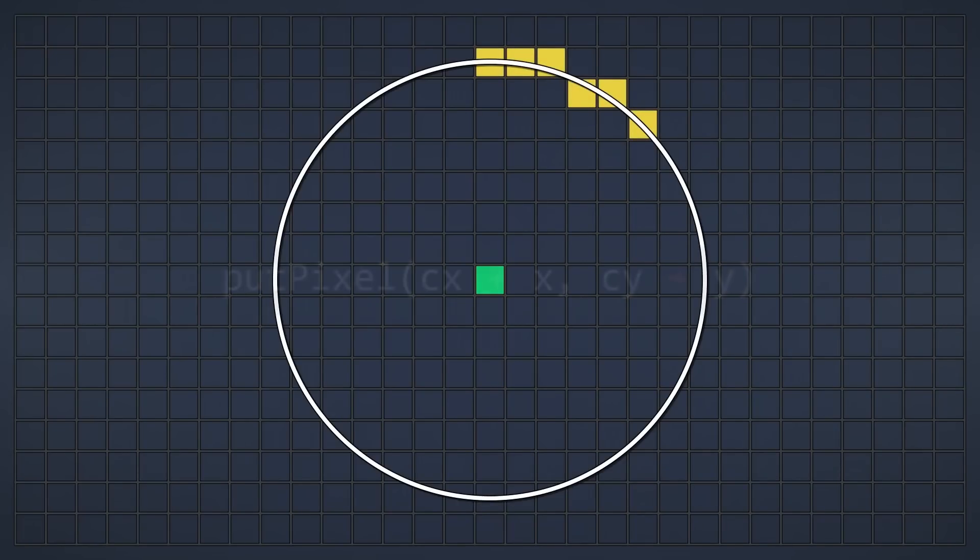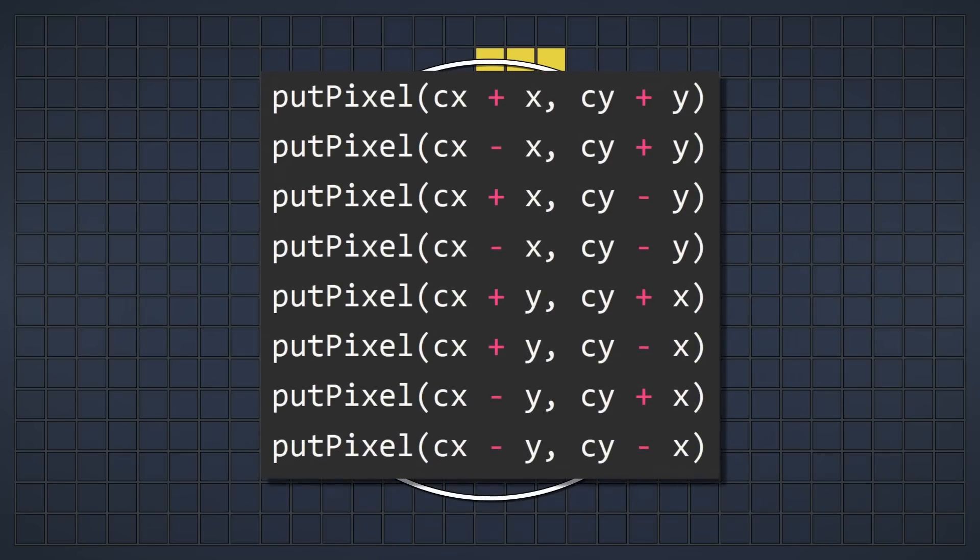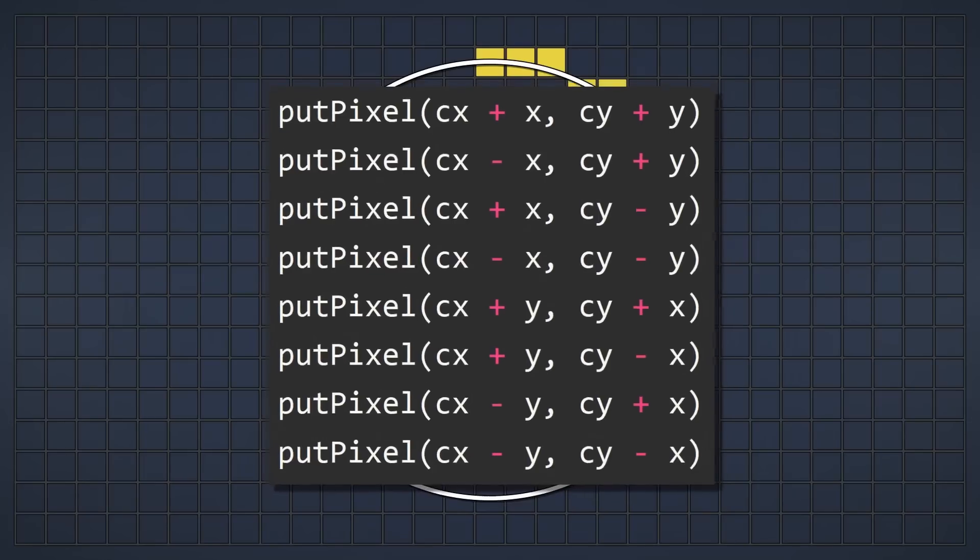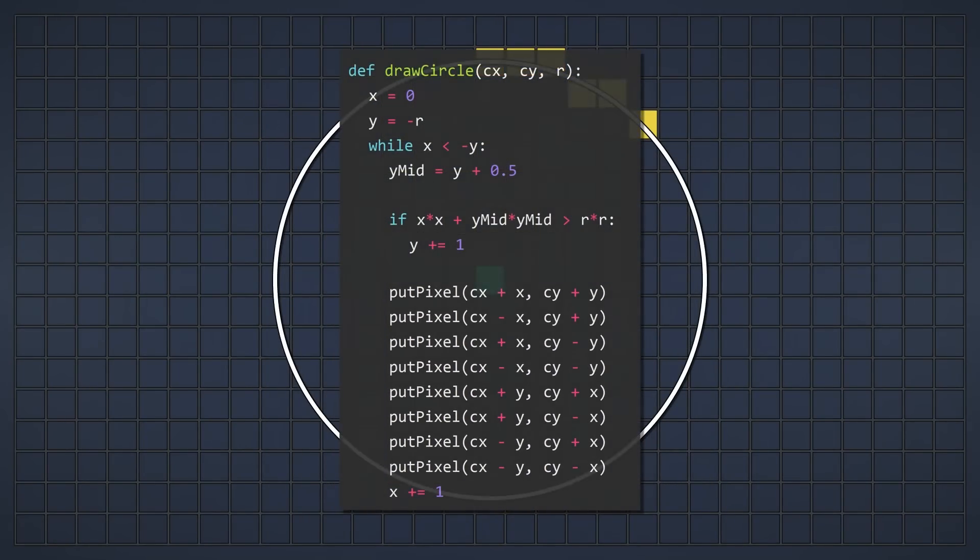Currently, this is how we place our pixels. What if instead we place 8 pixels at once, one for each octant? That looks something like this. Essentially, we just mirror our pixel coordinates for every remaining octant. And that's it. We now have a fully working implementation of the midpoint circle algorithm.